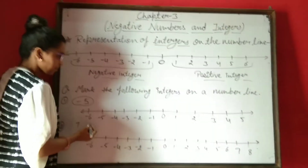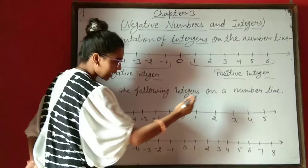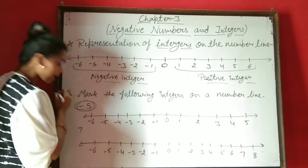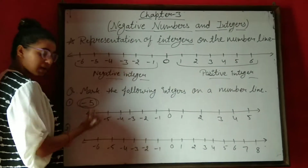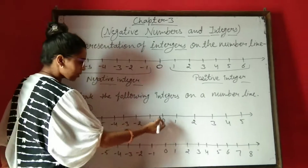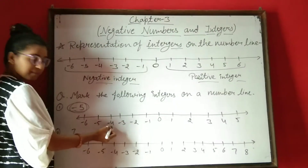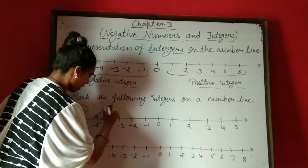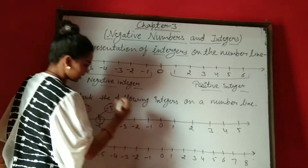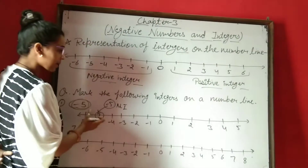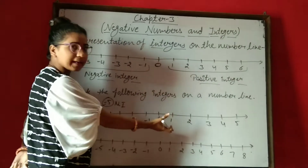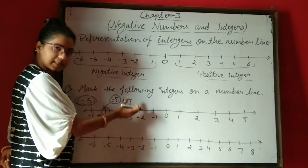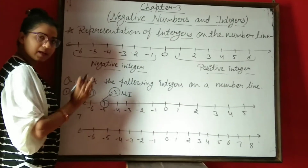तो सबसे पहले हम एक number line draw कर लेंगे. Then center में 0 put करना है, right side में positive integers और left side में negative integers. हमें represent करना है minus 5. तो minus 5 पर आपने circle किया, यहाँ पर arrow लगा के लिख सकते हो — minus 5 is the negative integer. इस type से आपने सबसे पहले एक simple number line draw करनी है, उस पर integers mention करने हैं, और जो भी integer पूछेंगे उसे simply circle करके mention करना है.